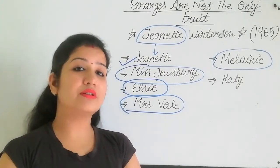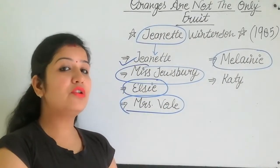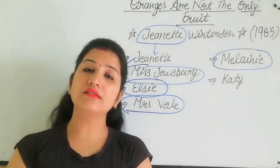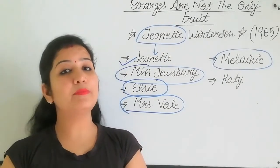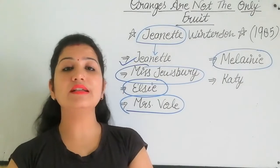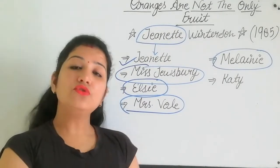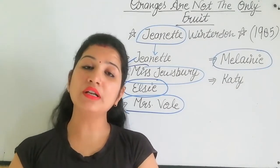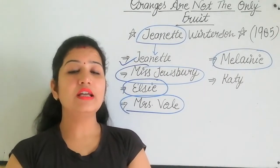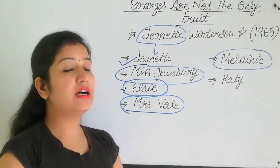During a sermon at the church, the main church leader discovers the relationship between Melanie and Janet. The church members think there is a demon controlling Janet. To free her from the demon, church members lay their hands on Janet for 14 hours straight as a form of exorcism.